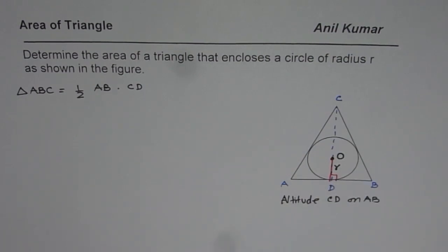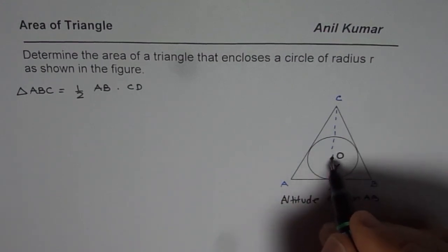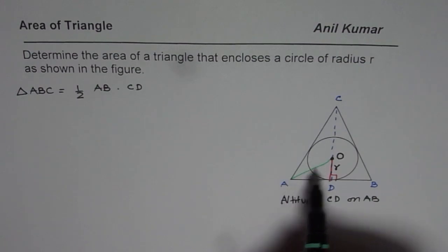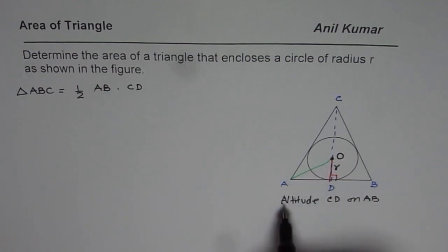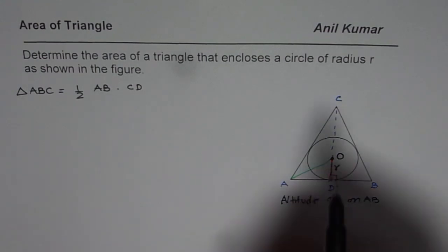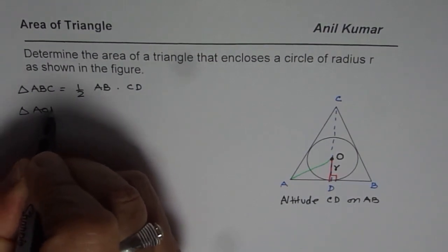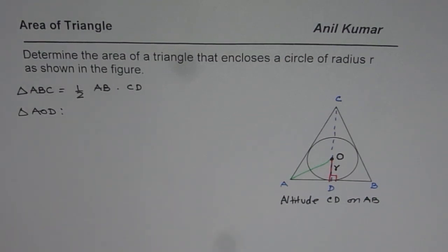To find that what we can do is we can connect the center with the vertex A and then we have a triangle AOD which is the right triangle in which one of the sides is known to us. Since one of the side is known to us we can actually solve this triangle. So let us solve the triangle AOD.